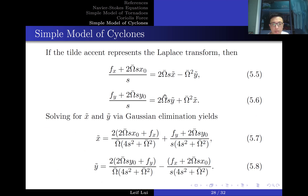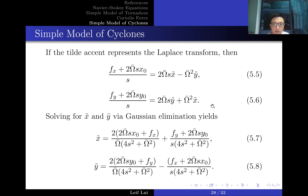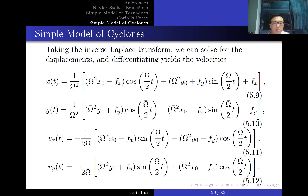Taking the Laplace transform gives two coupled algebraic equations in x̃ and ỹ. Solving for x̃ and ỹ using Gaussian elimination gives explicit expressions for the Laplace transforms of x and y. Taking the inverse Laplace transform — done using Wolfram Alpha — gives the displacement equations for x and y, which preserve a very similar structure. Taking derivatives to obtain velocity, the constant terms involving f_x and f_y drop out.